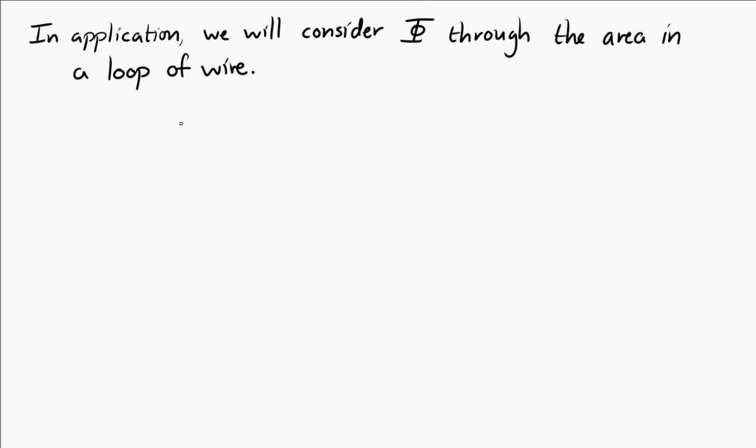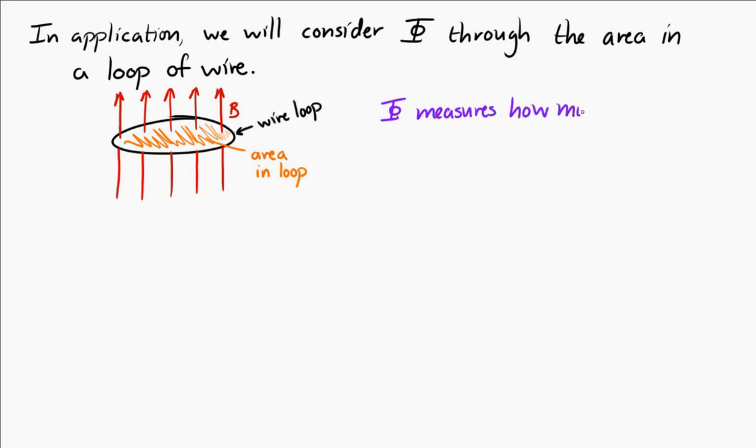Now, when we talk about the magnetic flux, usually we're going to consider the magnetic flux through an area inside of a loop of wire, or maybe a circuit, which is really just a loop of wire anyway. So imagine we have this wire loop, and we have a magnetic field passing through like this. The flux measures how much field passes through the loop.